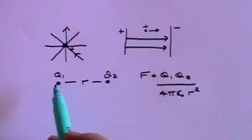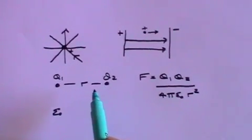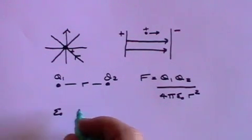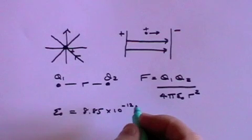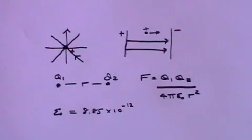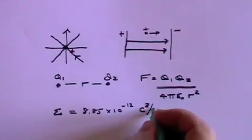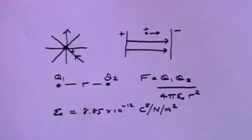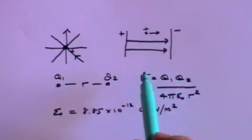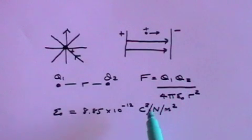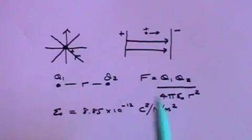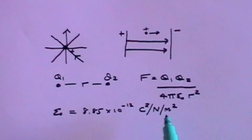Most of the time we have either air or vacuum between the charges, and for all practical purposes they are the same. Epsilon naught has a value of 8.85 times 10 to the minus 12. The units can vary — sometimes it's Coulombs squared per Newton per meter squared, which is what you need to be dimensionally consistent, because the force will be in Newtons, the charge will be in Coulombs squared, and r squared will be in meters squared.